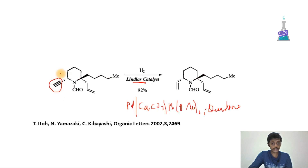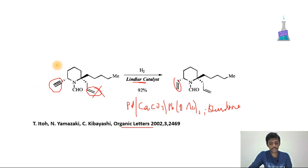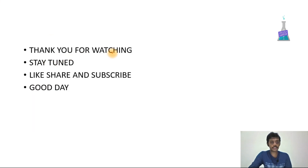The alkyne is converted into the cis alkene, and the alkene is not converted into an alkane. This example is also taken from Organic Letters. Thank you for watching this video — please like, share, and subscribe, and have a good day.